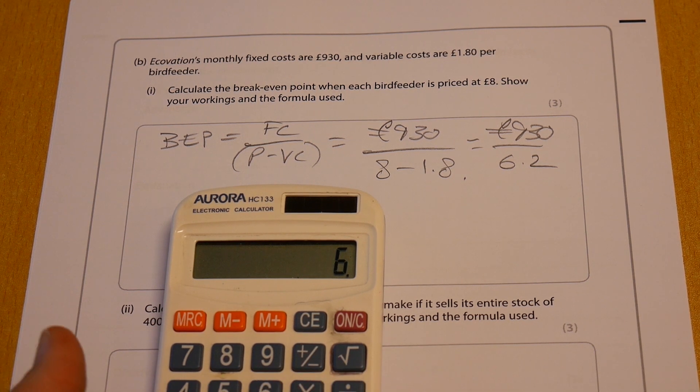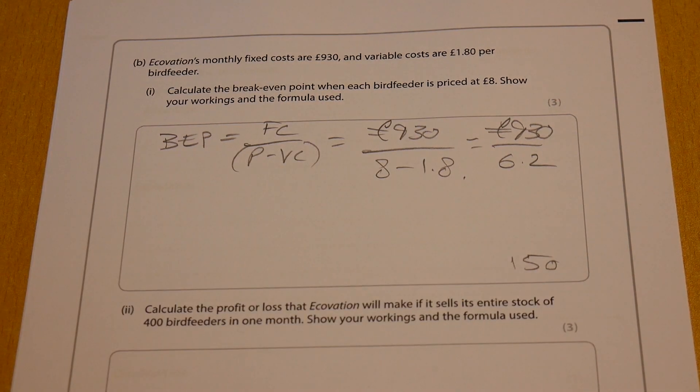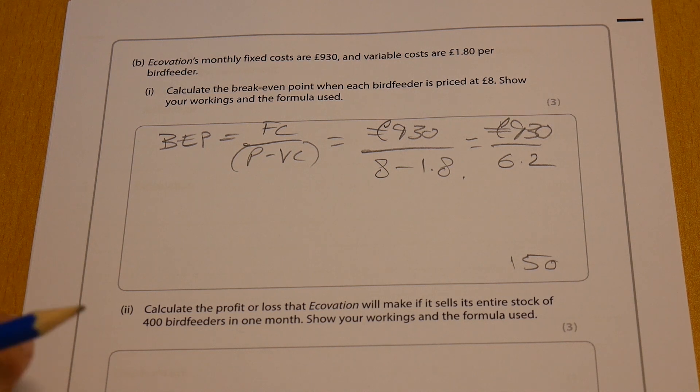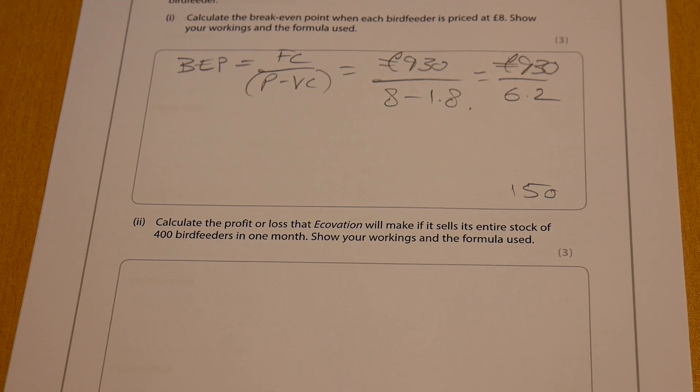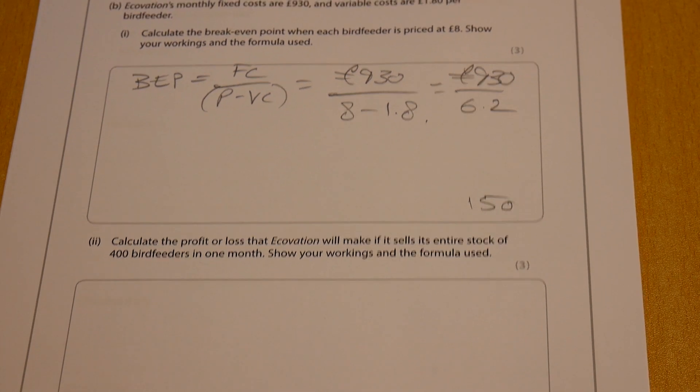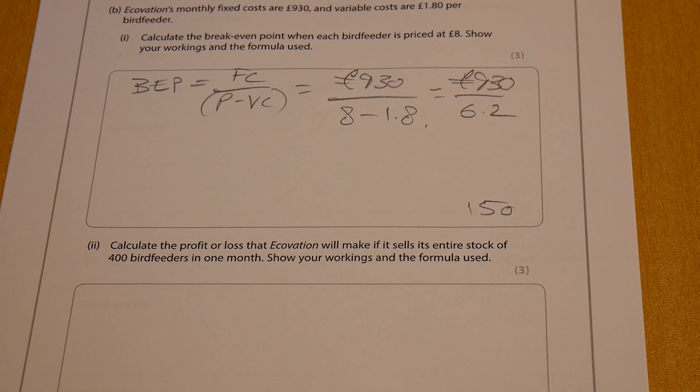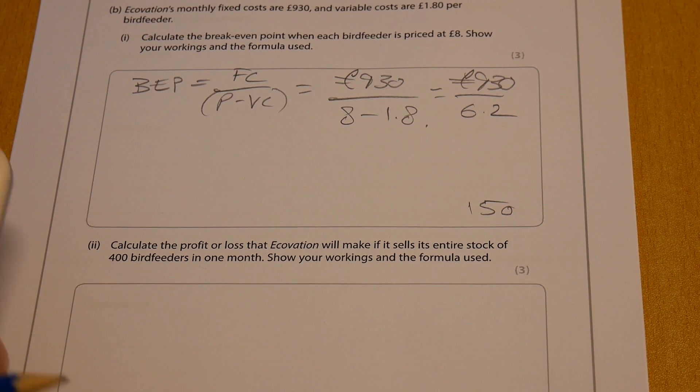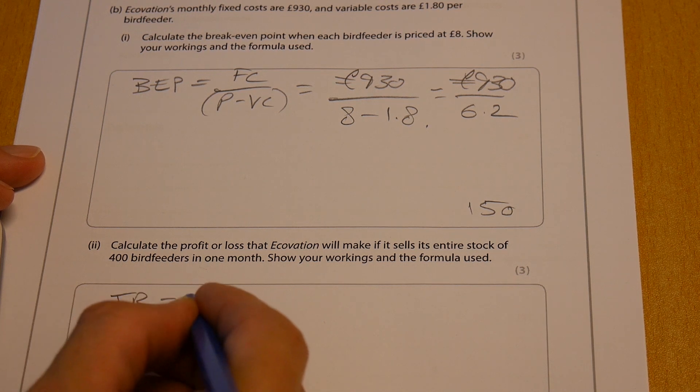Right, so 930 divided by 6.2 - okay, so we're looking at 150 of these bird feeders for Ecovation there. Right, so calculate the profit or loss that Ecovation will make if it sells its entire stock of 400 bird feeders. So if you've seen the previous video on this, you should be pretty good on this.